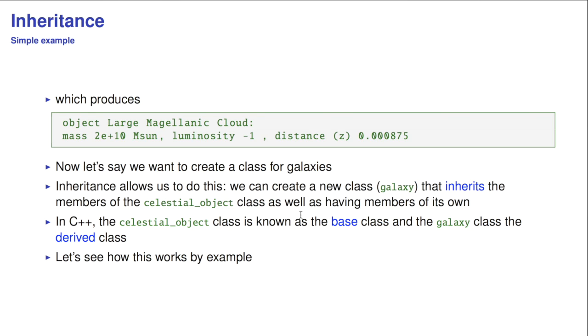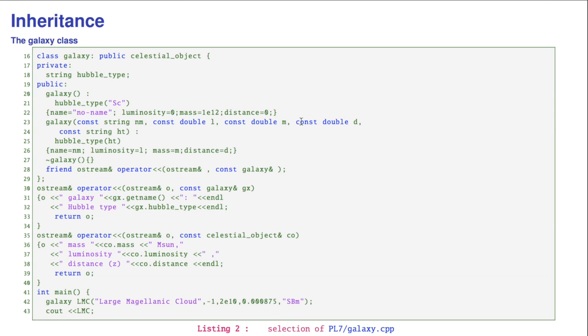So let's see how this works by looking at an example. So we modify our code a little bit. We add a galaxy class. We say public celestial object. We'll have to explain a little bit what that means later on. And then that class will have its own constructor and its own destructor and has its own function to insert into an output stream, which we then implement afterwards. And the code almost looks the same, apart from the fact we now declare a galaxy LMC. And for the galaxy we also declare its Hubble type, which we set over there. Now the one change we make to this code, if you open this, is that in the celestial object class we've made all its members public. And we'll see later on why that has to be done.